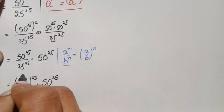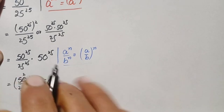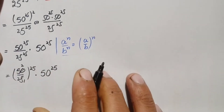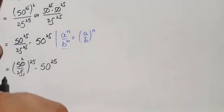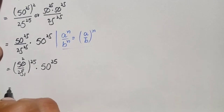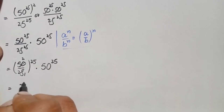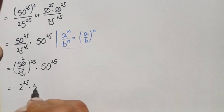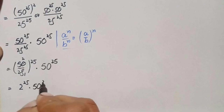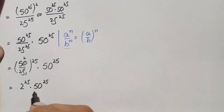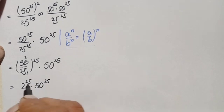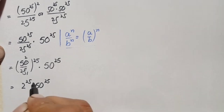Now 50 divided by 25 equals 2, so this becomes 2 raised to power 25 times 50 raised to power 25. Both numbers now have the same power.